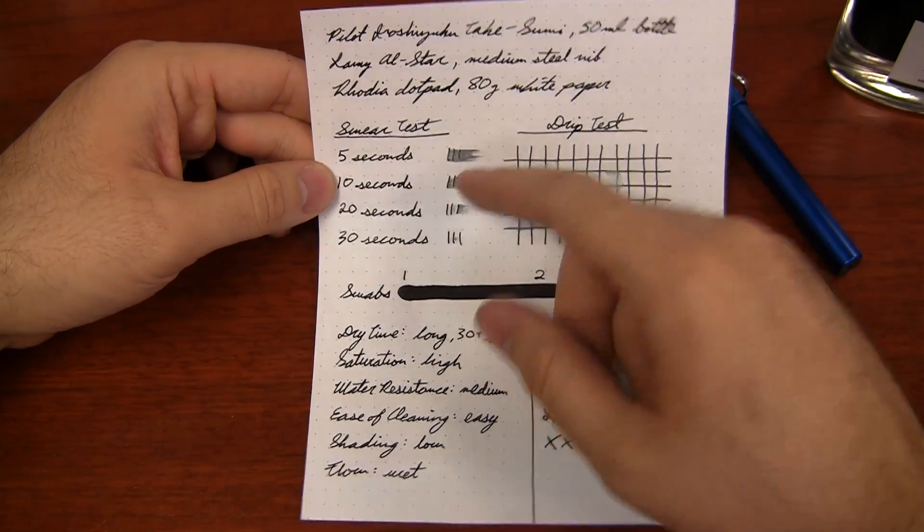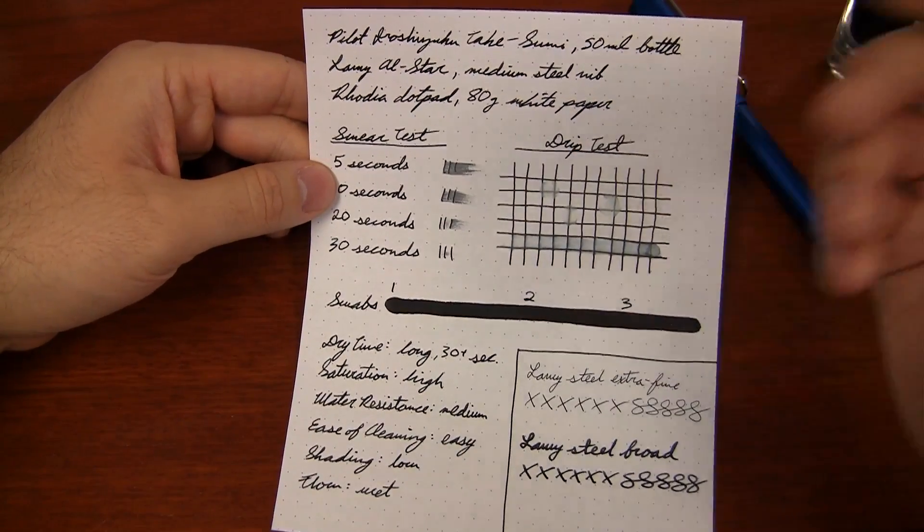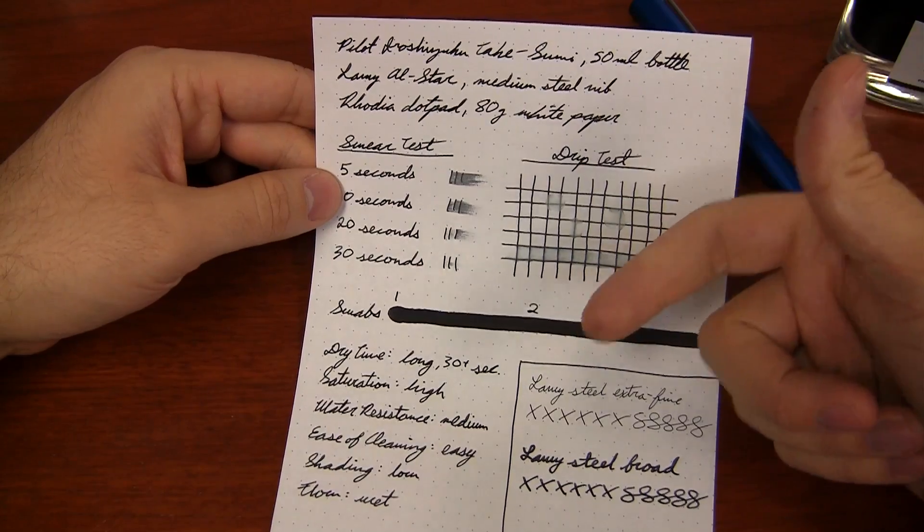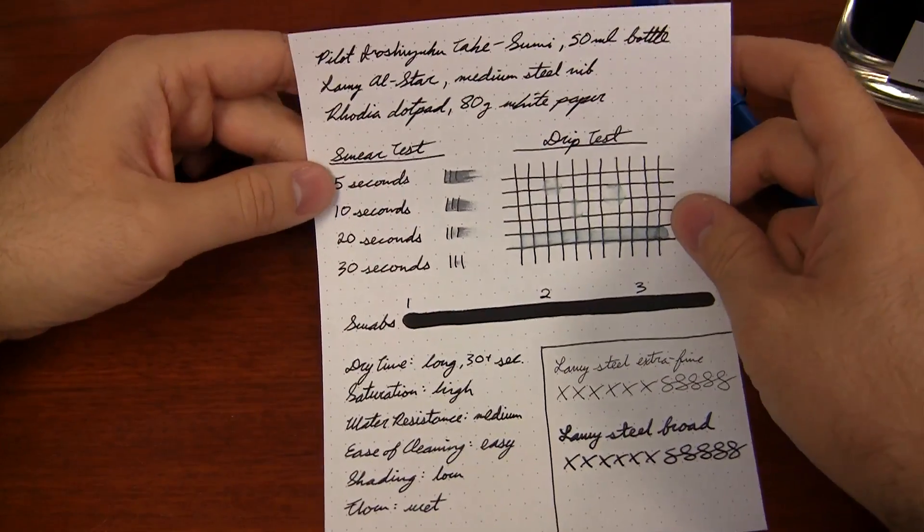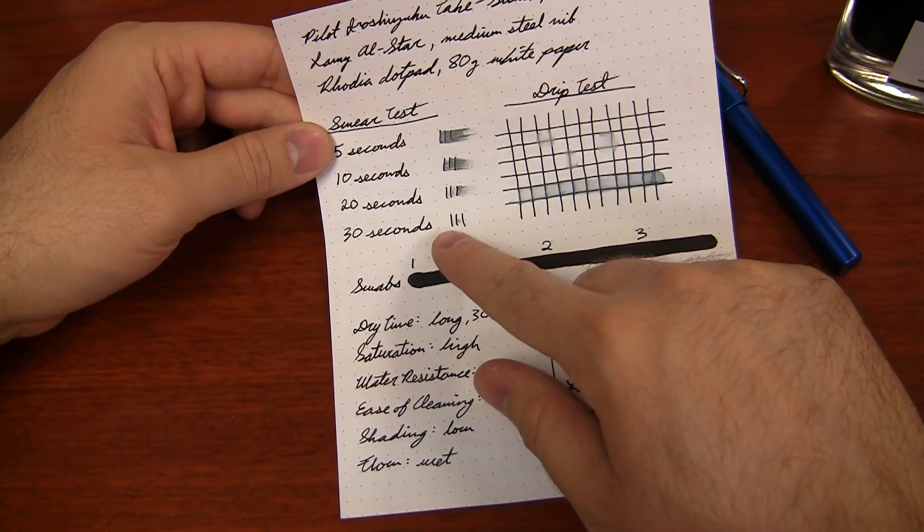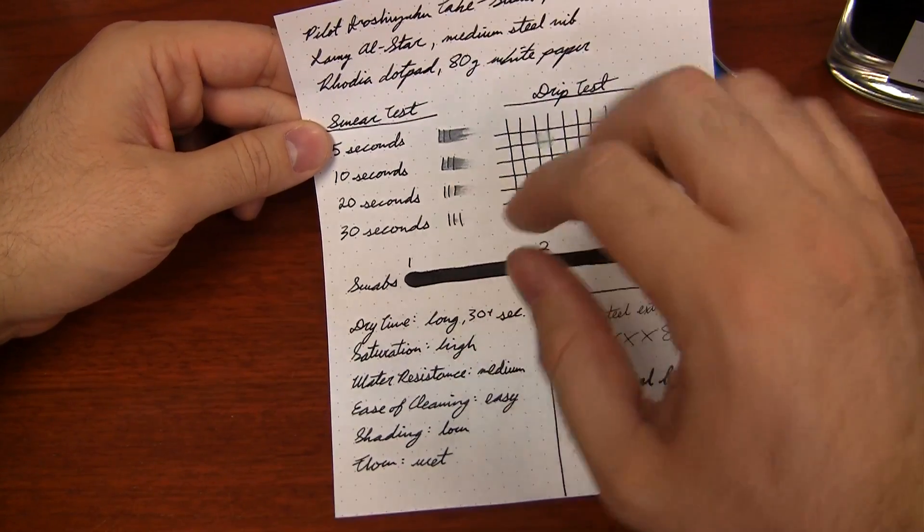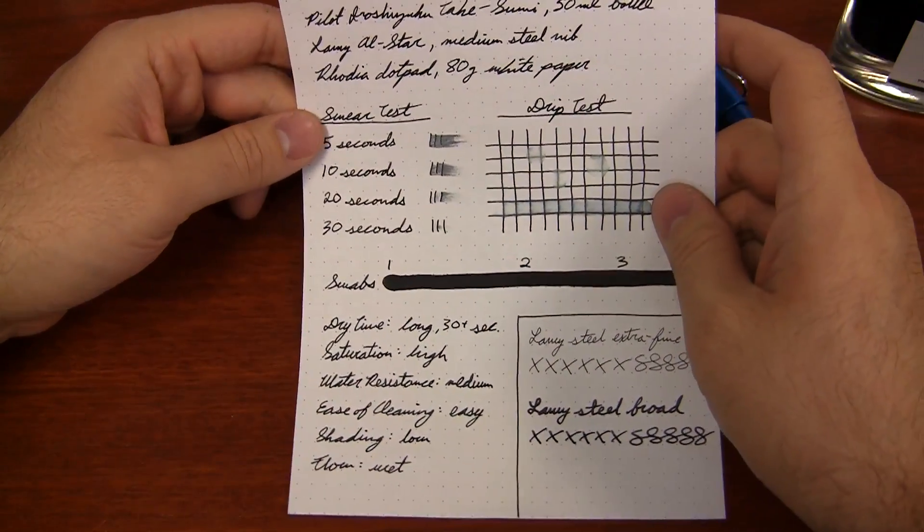Most of the Iroshizuku inks dry within five to ten seconds. I found that actually all three of the recent ones, Ama-Iro, Shinkai, and Takesumi, all have a pretty extended dry time. This one was upwards of 30 seconds. Now, it didn't smear too bad in the later 20, 30 seconds, but it was still noticeable. So I had to point it out.